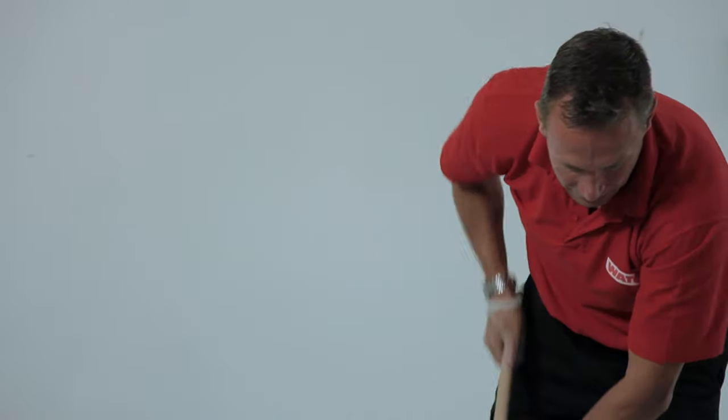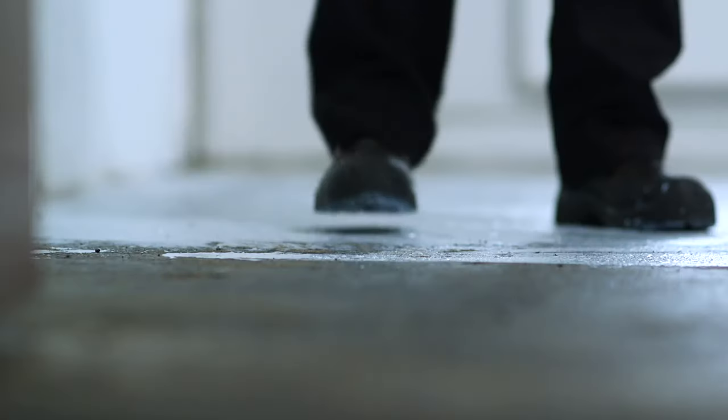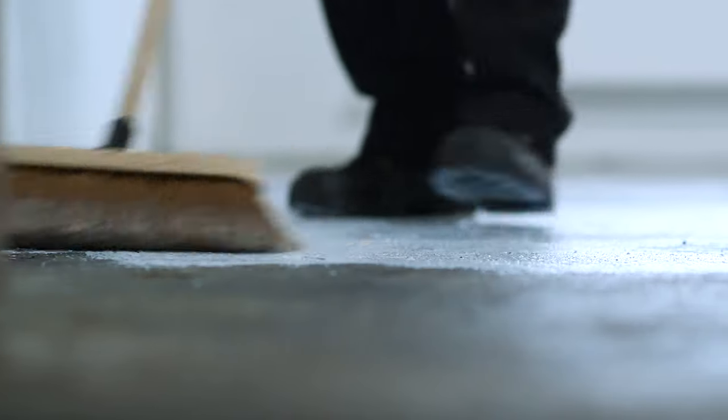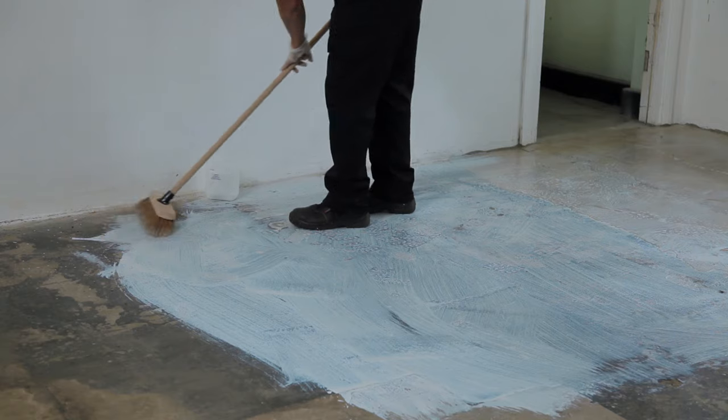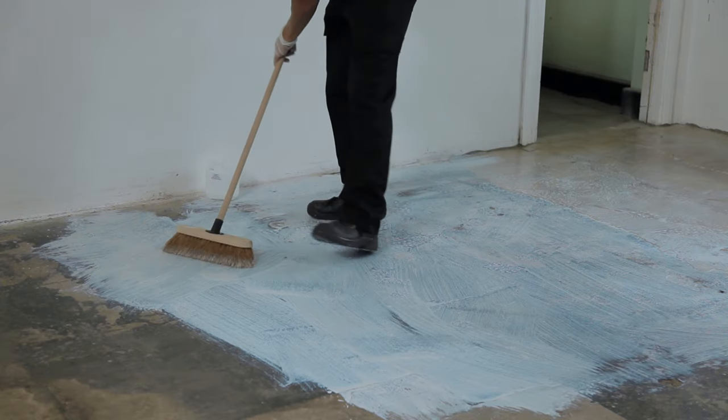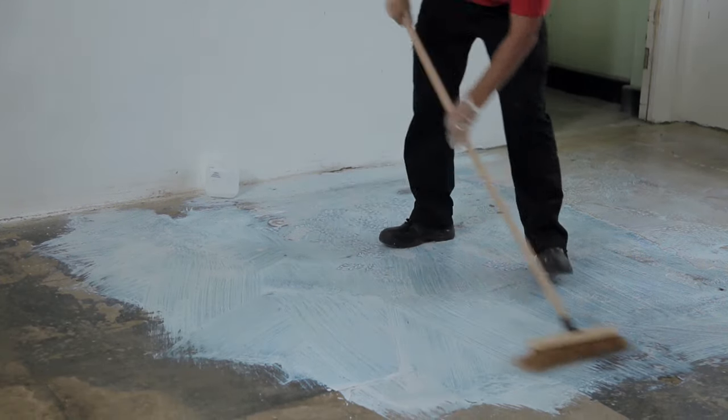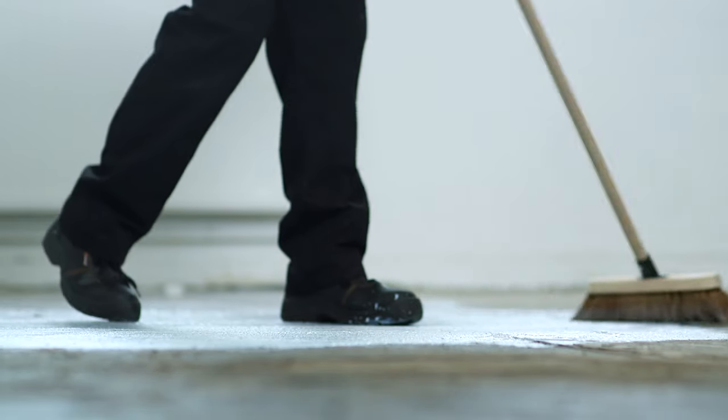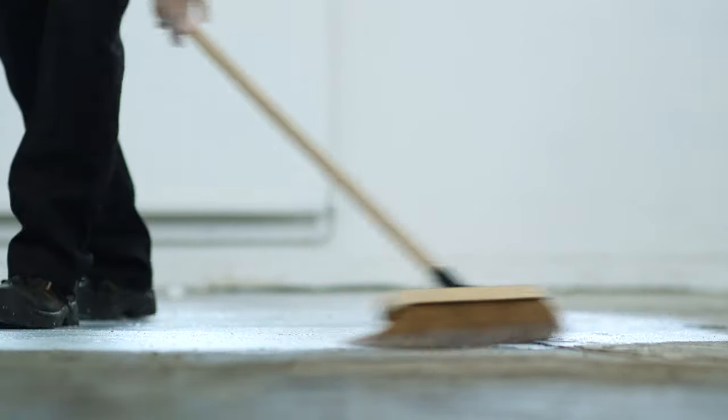Both primers need to be applied as a thin, even film and avoid any ponding on the surface as excess primer can bleed through and stain the wet Flowtop top coat. There's sufficient Primer 2 to allow for very absorbent surfaces. Application to less absorbent surfaces will require less than the amount supplied.